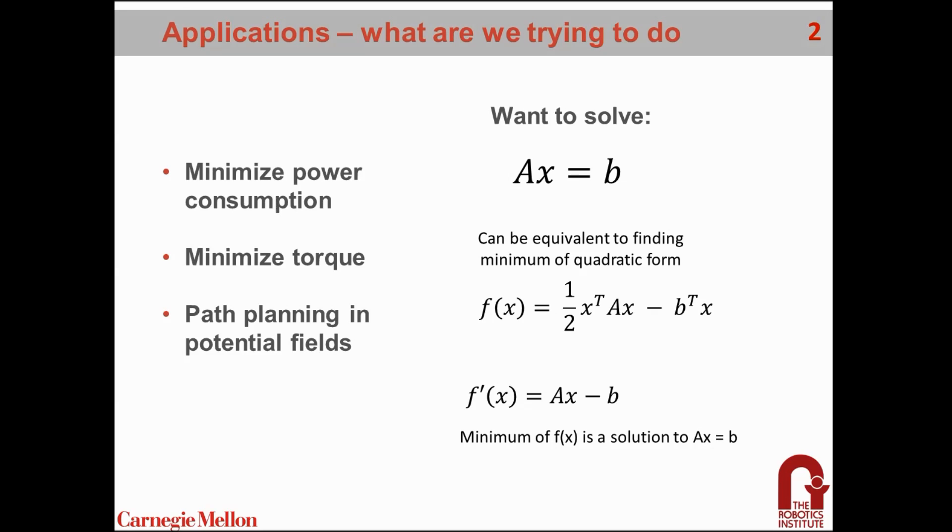Starting with applications and what we're trying to do, the Conjugate Gradient Method is an optimization technique. If you want to minimize power consumption, or minimize torques for some trajectory of a robot arm you're designing, or maybe you're path planning in potential fields, really any application where you have some sort of cost function that you want to minimize.